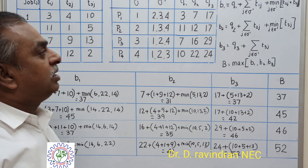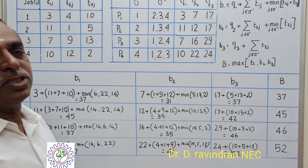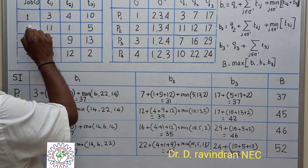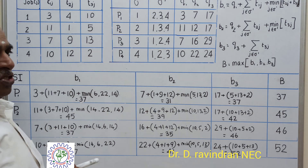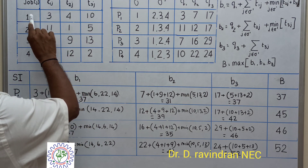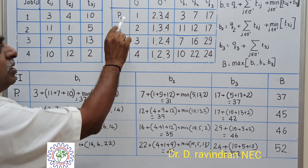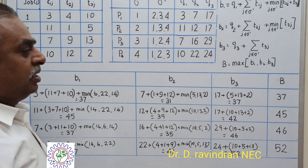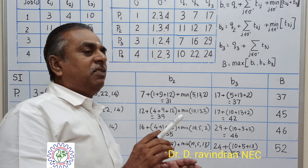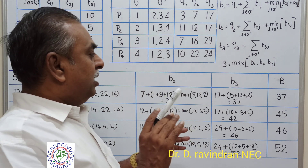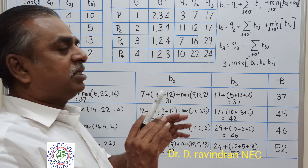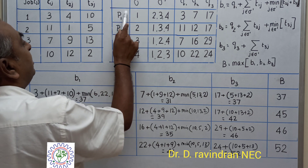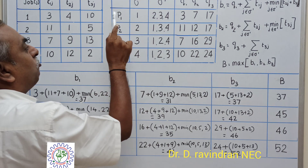This Branch and Bound algorithm is carried out stage by stage. In the first stage, we are deciding which job has to be processed initially. We will consider each job when processed first — first job, second job, third, and fourth — and finally conclude which job should be processed first to minimize the total maximum time.